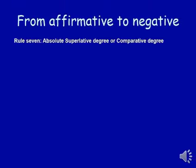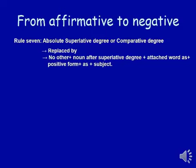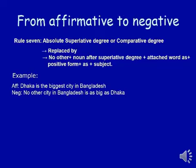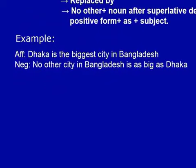Rule number seven: the absolute superlative degree or comparative degree is replaced by 'no other' plus noun of the superlative degree plus verb plus positive form plus subject. The absolute superlative degree is when only one thing is described as the best in its class. For example: 'Dhaka is the biggest city in Bangladesh.' To transform from affirmative to negative, write 'no other' at the beginning, then the noun, then the verb, and then 'as big as' plus subject.